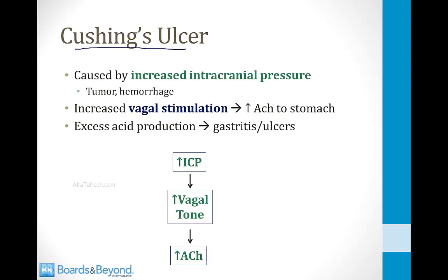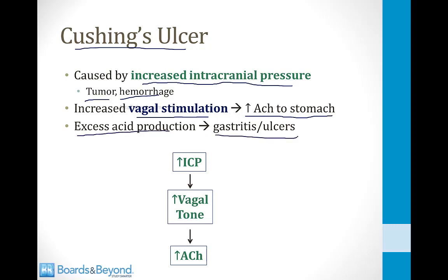A Cushing's ulcer is also an acute injury to the stomach lining, caused by increased intracranial pressure from a tumor or hemorrhage into the brain. This results in increased vagal stimulation, leading to increased acetylcholine to the stomach, which promotes acid production in the parietal cells. Patients with increased intracranial pressure thus have excess acid production, leading to gastritis and ulcers called Cushing's ulcers. These patients are also placed on proton pump inhibitors to prevent this.